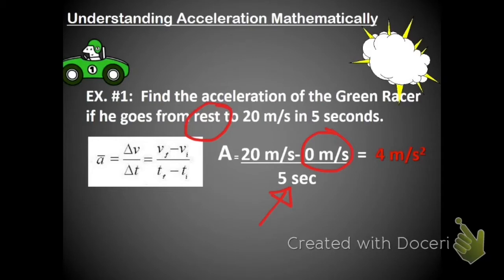Then I divide, and I find that the acceleration is 4 meters per second squared. Let's look at that unit for a second. We've got meters per second divided by seconds, and so really that could be written as meters per second times seconds, and that's where we get meters per second squared.